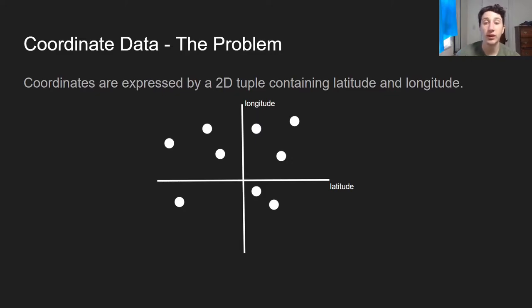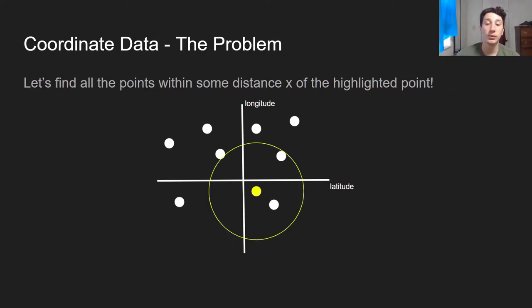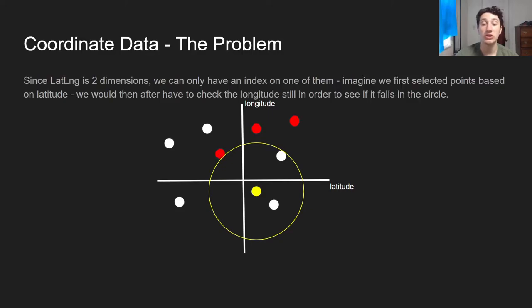So what's the problem with coordinate data? Why can't we just use a typical index? Coordinates are typically expressed by a latitude-longitude tuple. If we imagine latitude and longitude on this Cartesian plane, where latitude and longitude are each one axis, we have all of these points. Now let's imagine that we want to find all of the points within some distance of that yellow highlighted point. That would be those two points in the circle there.